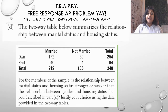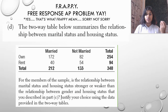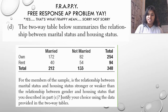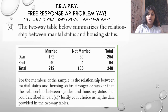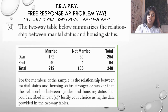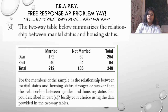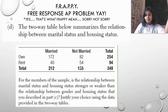Part B gives us a table between marital status and housing status — no longer gender, but whether you're married and own, or not married, etc. For this question, we need to answer whether the relationship between marital status and housing status is stronger or weaker than the relationship between gender and housing status. We'll compare the answer from C to D and justify that choice using the data.